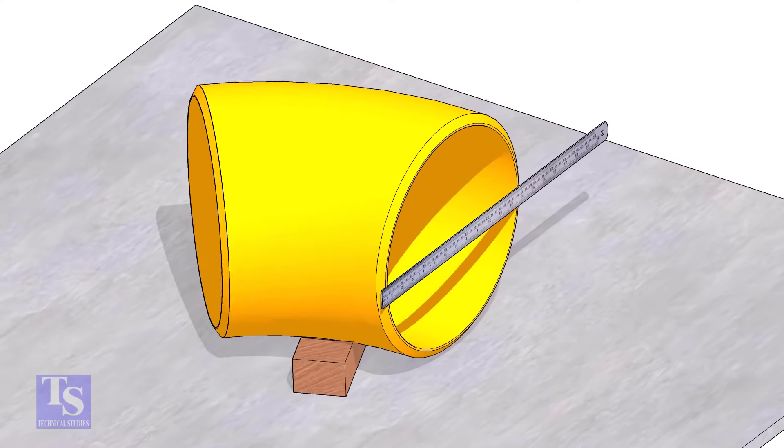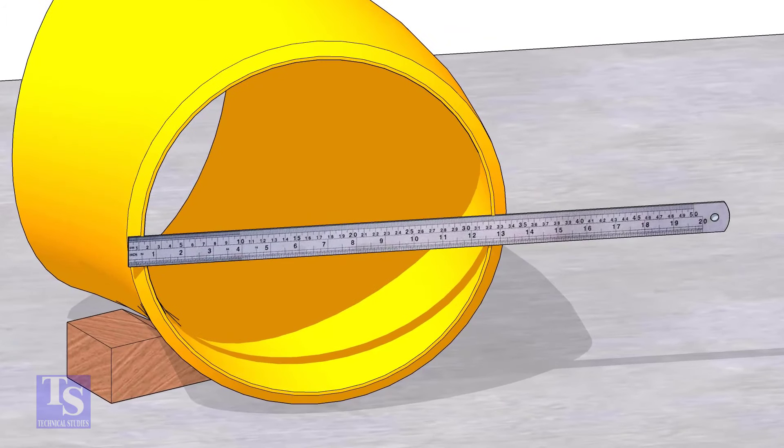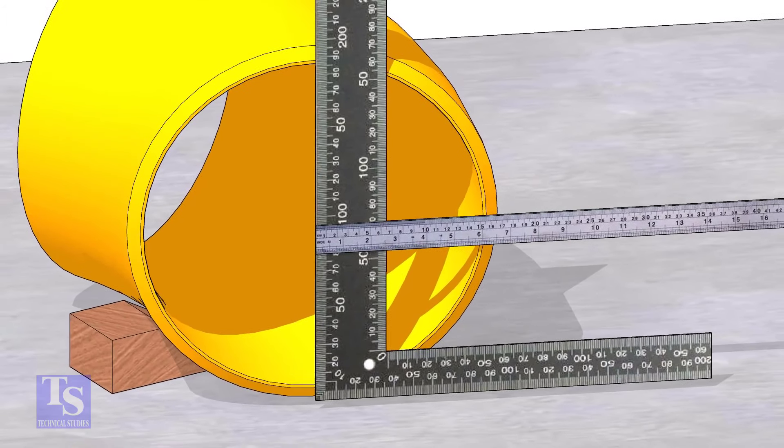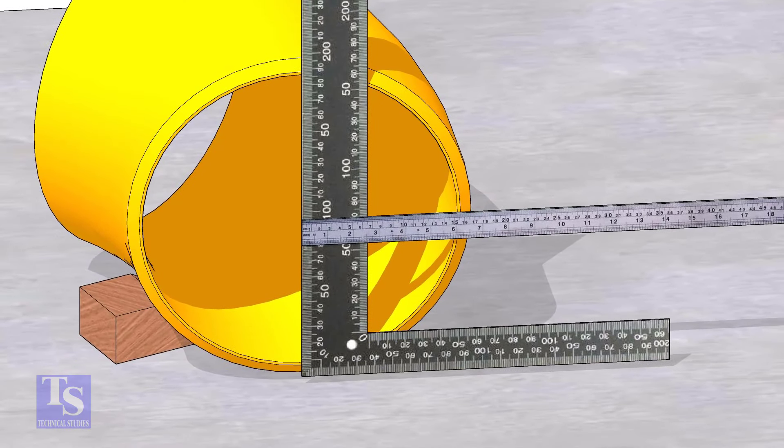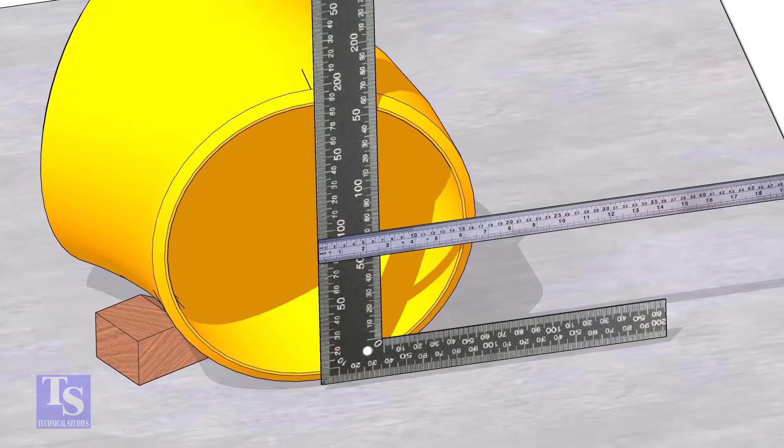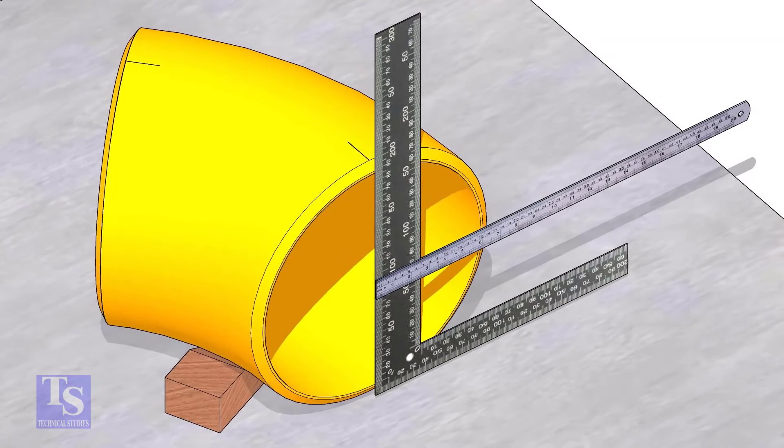Measure the OD. Put a right angle at the middle of one face of the elbow. Make sure the edge of the right angle is exactly at the center. Draw a line where the right angle edge touches the elbow face on the top and bottom side.